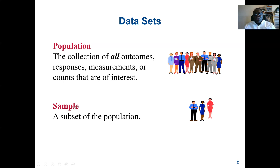A population is a collection of all the outcomes, responses, measurements, or counts that are of interest. A sample is the subset of the population. We have a diagram here - this is a population of all adults living in New York City, and we take a sample of three of them - selecting one, two, and three - so three out of maybe ten. That's a sample.